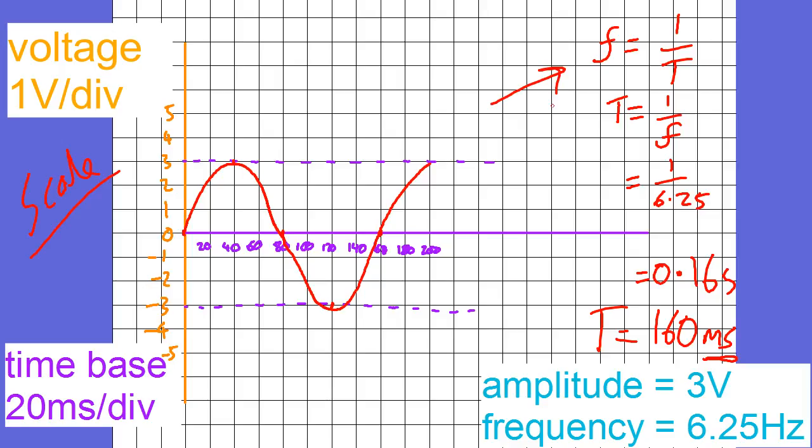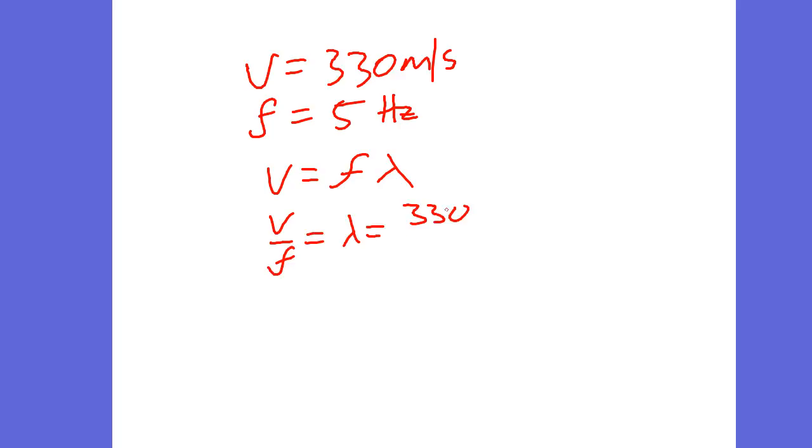The very last thing you might be asked to do on this sort of question would be, you might be told that the speed is something, say 330, and one of them earlier was 5 hertz. So you'd say v = fλ, and then you'd say v/f = λ gives us 330 over 5, so 66 meters. So you might be asked to just do some work there. Hopefully that's helped with oscilloscopes. Any questions, stick them in the comments.